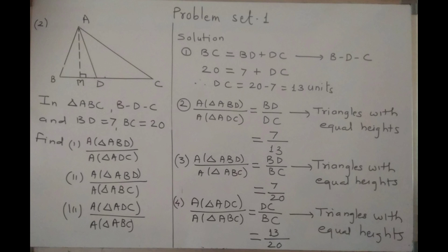Now, area of triangle ABD upon area of triangle ADC is equal to BD upon DC, as these triangles have equal height. Substituting the values, we will get area of triangle ABD upon area of triangle ADC is equal to 7 upon 13.